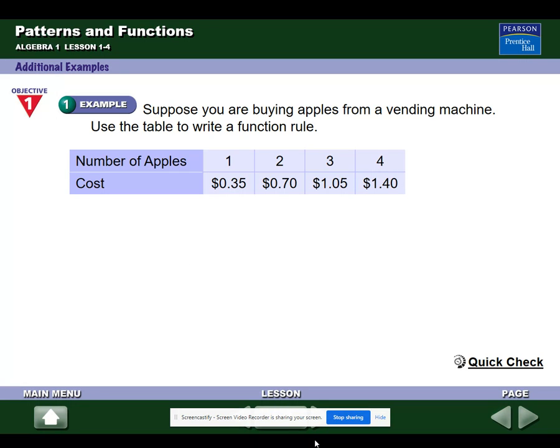Here's an example. It says, suppose you're buying apples from a vending machine. I have to say, I've never seen that vending machine. It says, use the table to write a function rule. Now, whether it's apples or cars or whatever, what we really should be looking at is the table itself. And it's good to pick variables that go along with what they stand for. So how about N for apples, or you could use A and C for cost. Those will be my two variables.